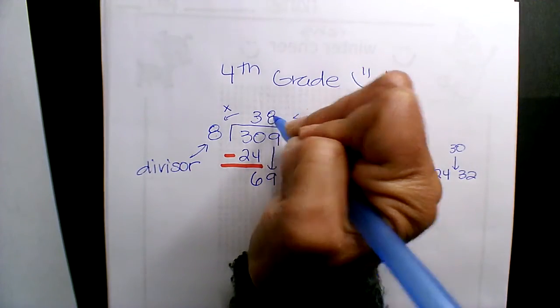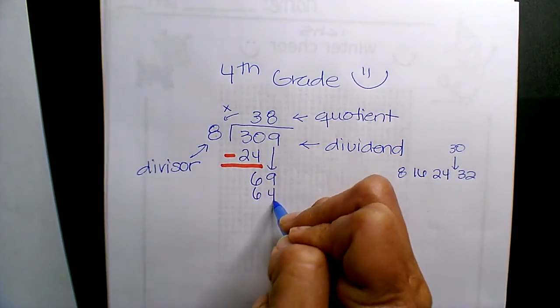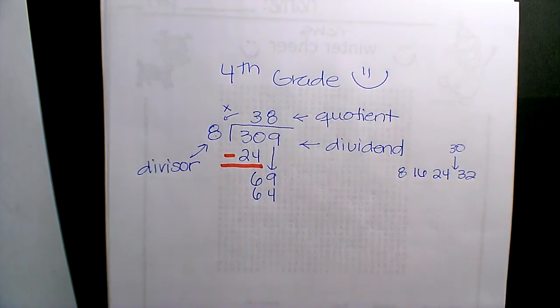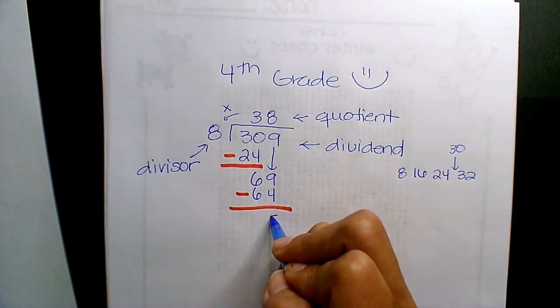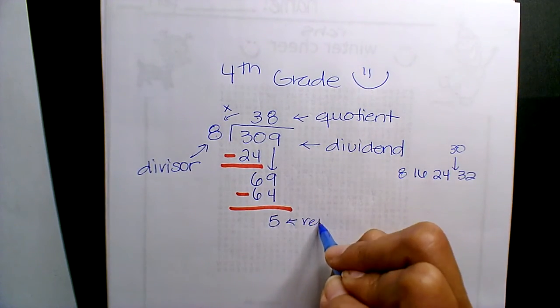So 8 times 8 gives me 64. So you come in with a subtraction, and I get 5, and so that is your remainder.